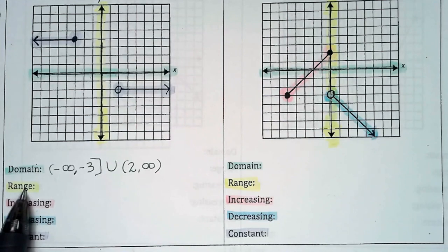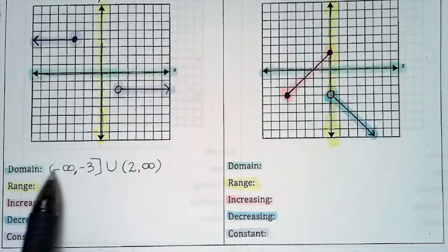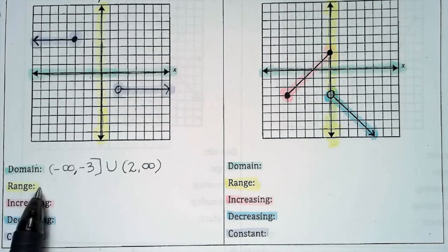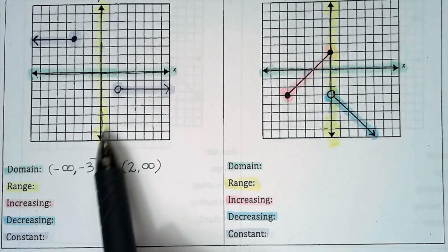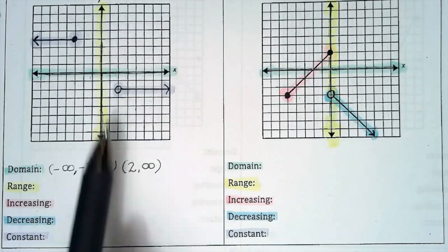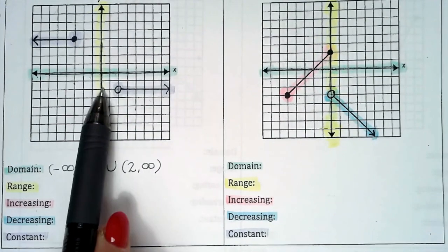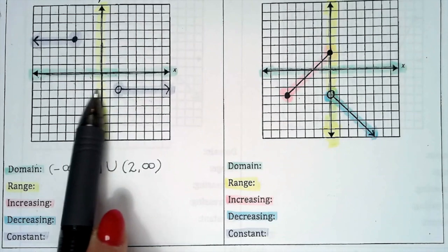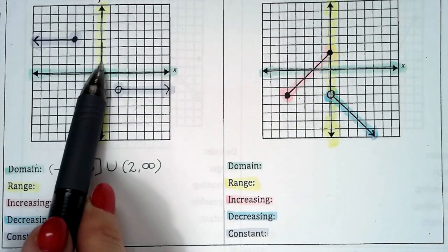And now for the range. The range is going to identify the y values. So the domain, we went from left to right. For the range, we're going to go from the bottom to the top, from small to big. From down here, the graph is this piece. Which y values are being used? Well, because of these two horizontal lines, we only have two y values being used. One of them is negative 2, and the other one is 1, 2, 3, 4.